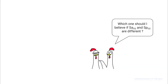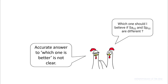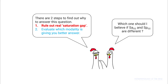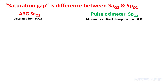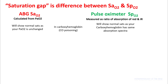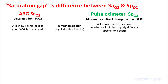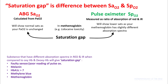Sometimes your SaO2 on ABG and SpO2 are quite different, and the question is which one to believe — and there is no really good or clear answer in the literature. However, there are two steps you should take: first, rule out a real saturation gap, and second, evaluate which modality is giving you the better answer. The saturation gap is the difference between SaO2 from ABG and pulse ox. For example, a patient with carbon monoxide poisoning will have normal SaO2 in both ABG and pulse ox — there will be no saturation gap. However, in a patient with methemoglobin, the ABG SaO2 will be normal, but pulse oximetry will show lower SaO2 because methemoglobin has different absorption in red and infrared compared to hemoglobin. So you will see a saturation gap.